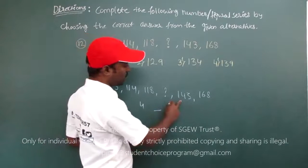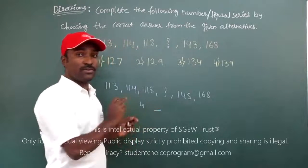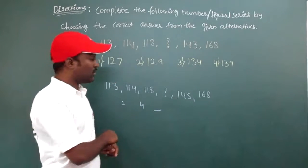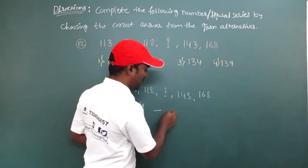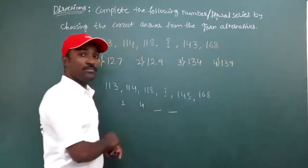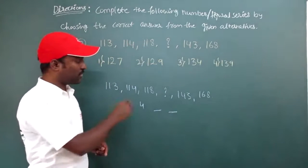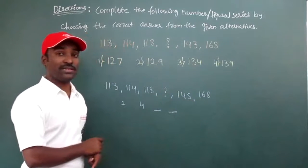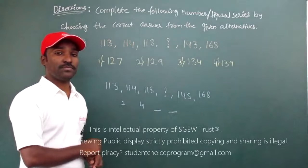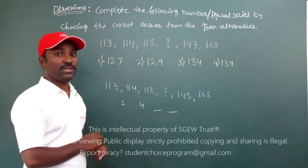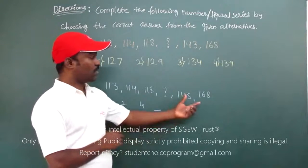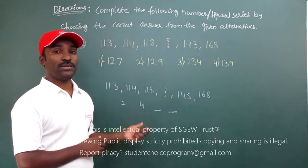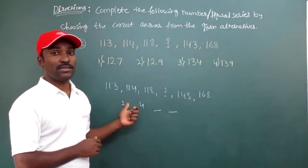Next, here 143 minus question mark. I don't know this question mark. That has to be found. So I will get one number here. I don't know that. I will put dash there. Now, moving to next numbers. 168 minus 143. What is 168 minus 143? 160 minus 140, that is 20. Now 20 minus 3, that is 17.